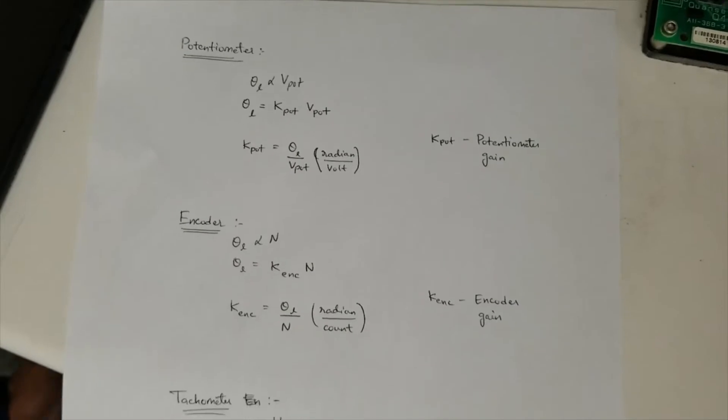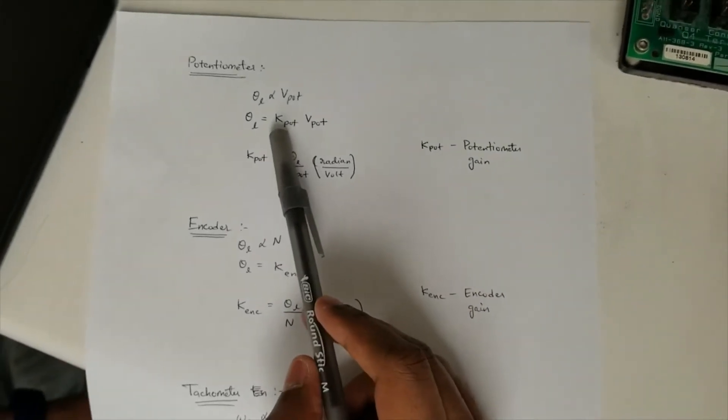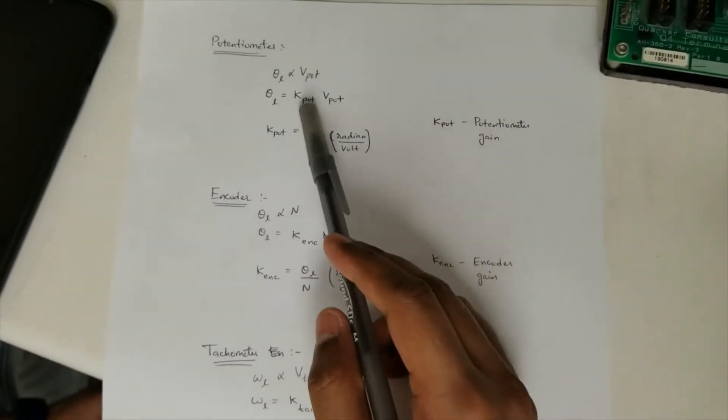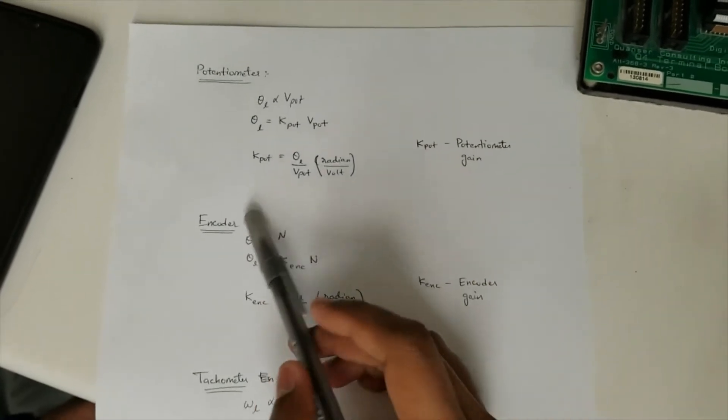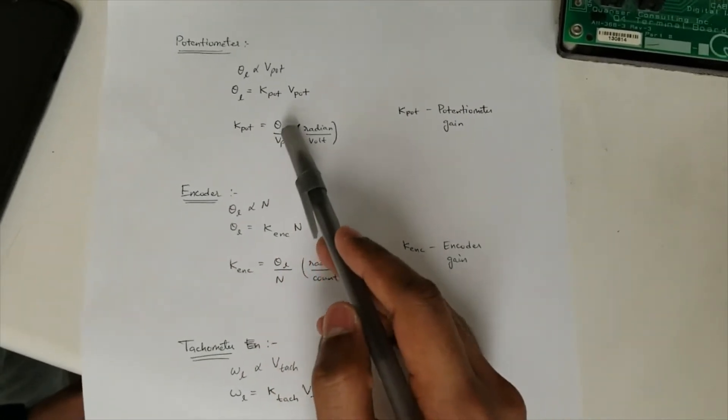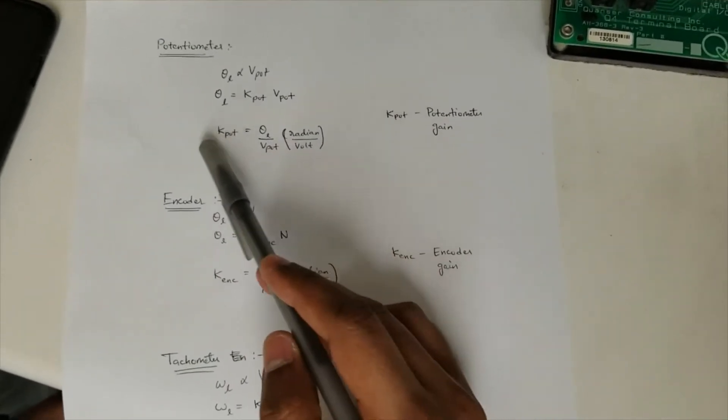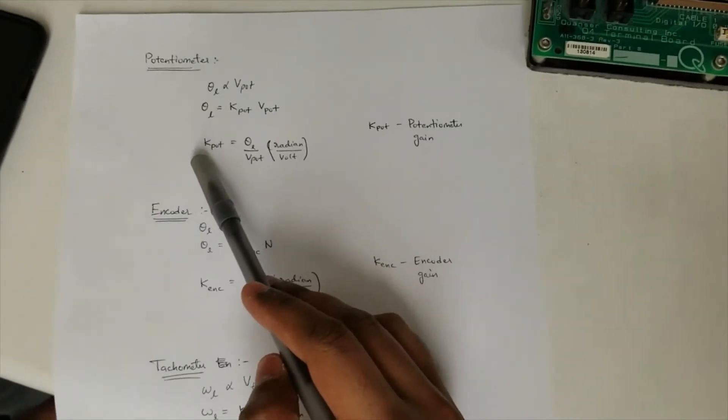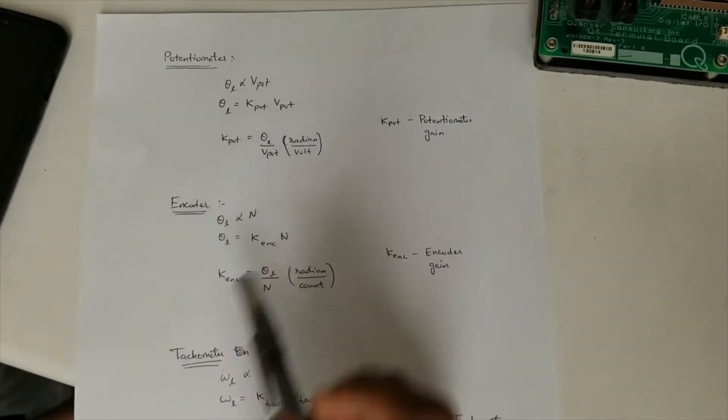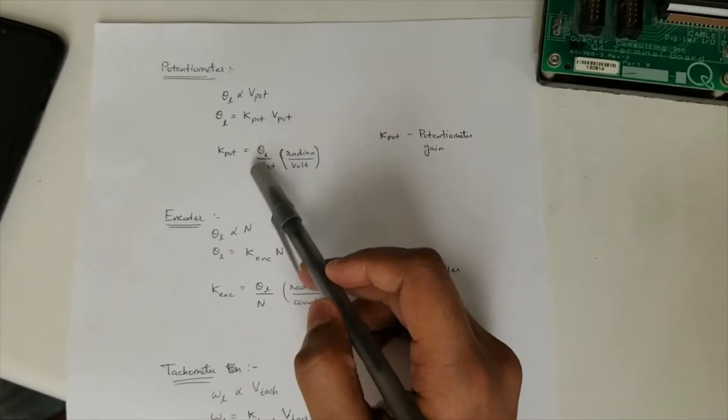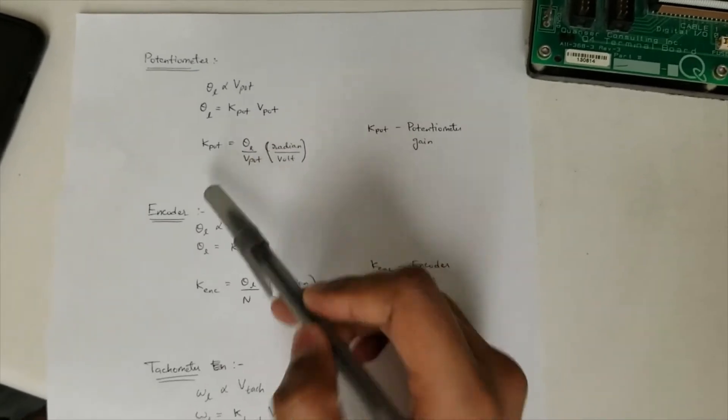You can take a proportionality constant and name it k_pot. k_pot equals theta_L by V_pot. Once you find the k potentiometer, you can find any value of theta if you have the voltage value.